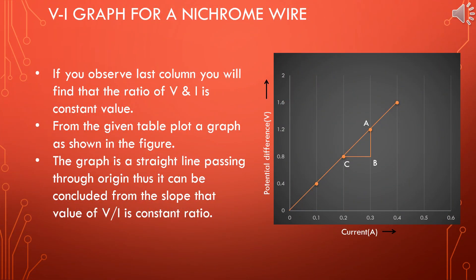Let us understand the V-I graph for a Nichrome wire. If you observe the last column, you will find that the ratio of V and I is a constant value. The values of potential difference and current from the table, if you draw in an x-y plane, you will get a straight line passing through the origin, and the slope gives a constant value — that is 4.